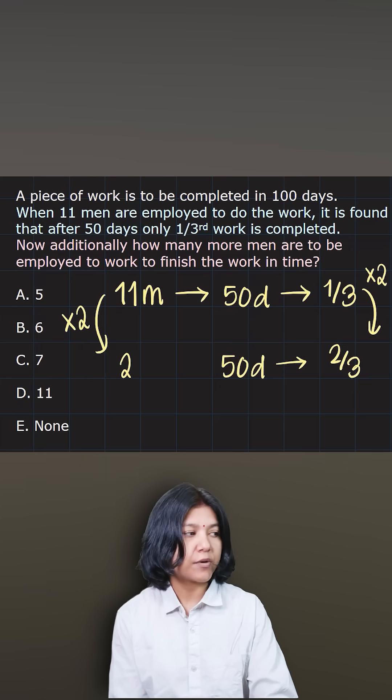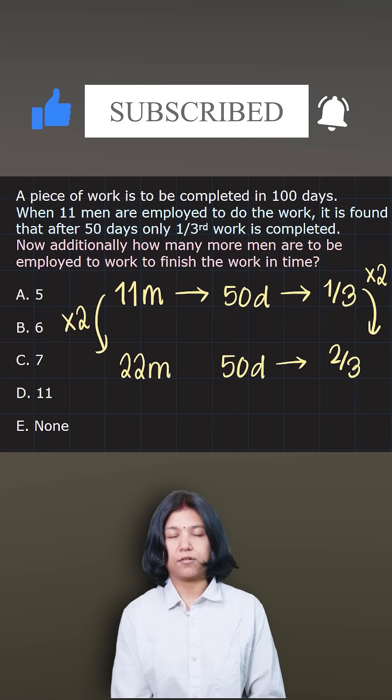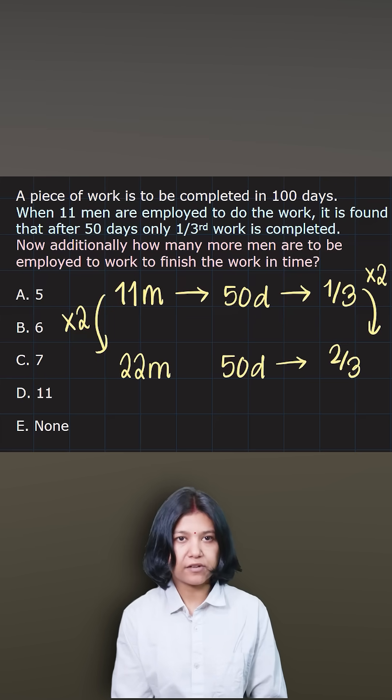So the answer would be 22 men would complete the same work, or the two thirds work, in the same number of days.